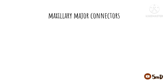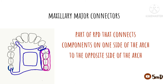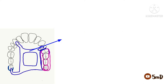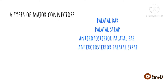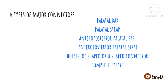Today we will see about the maxillary major connectors. As we saw before, major connectors are nothing but a part of RPD that joins the components on one side of the arch to those on the opposite side. As per GPT definition, regarding maxillary major connectors, we have six types: palatal bar, palatal strap, anteroposterior palatal bar, anteroposterior palatal strap, the U-shaped connector, and the complete palate.